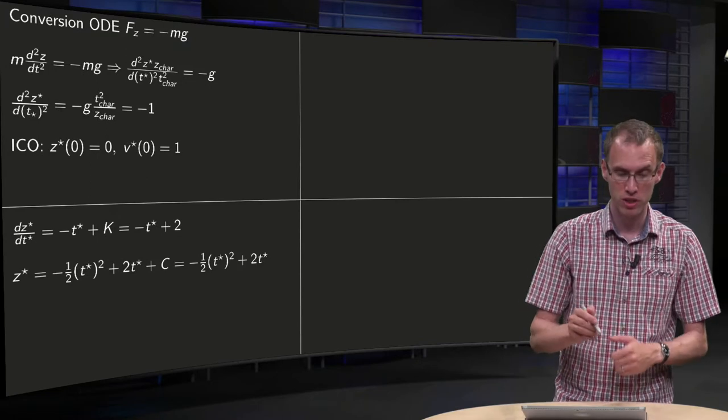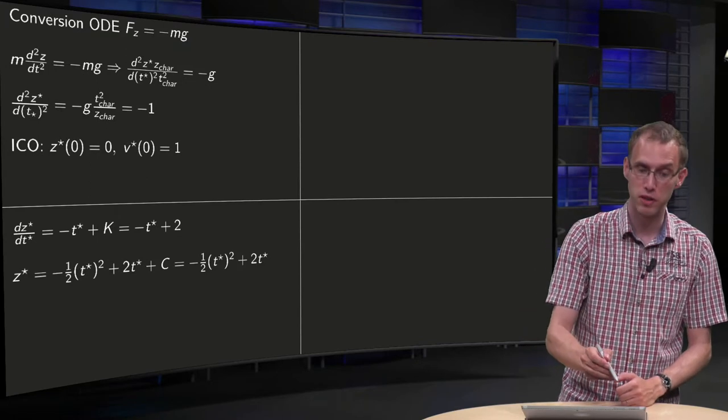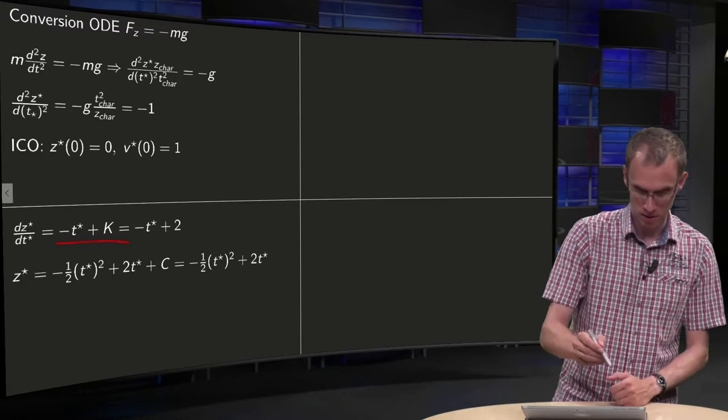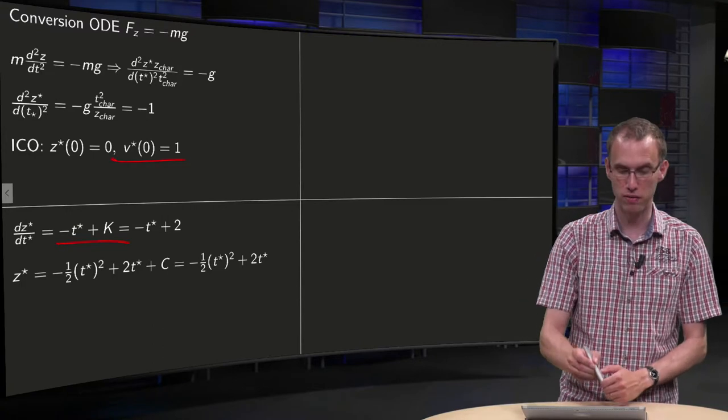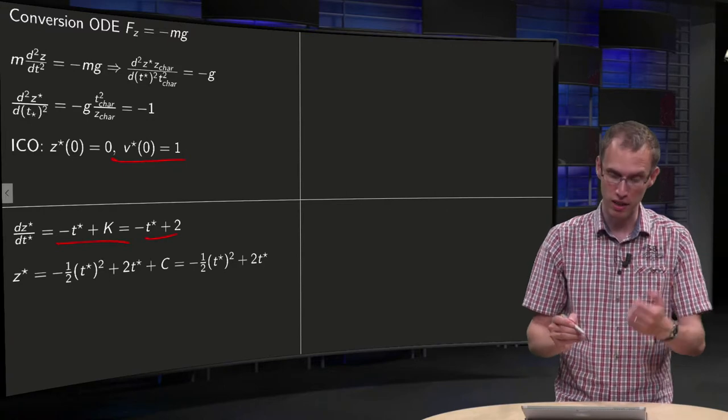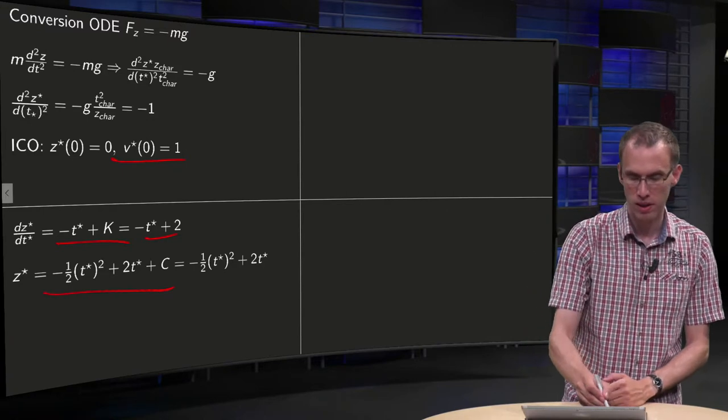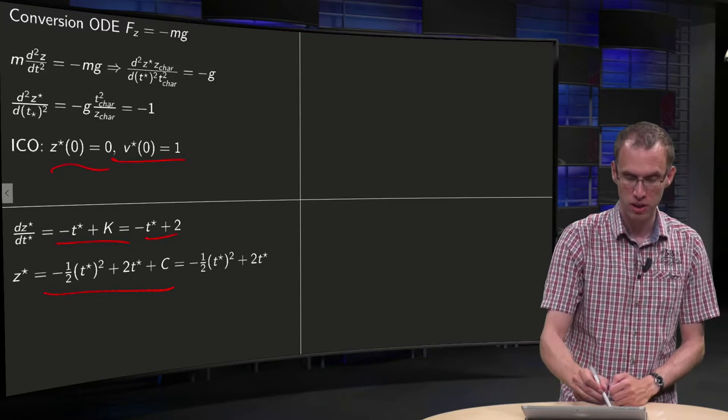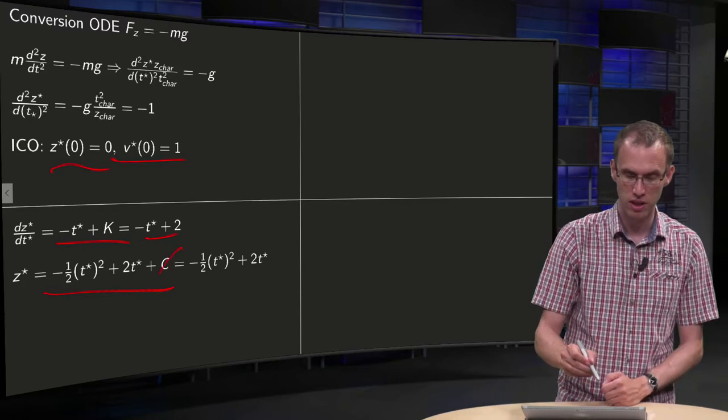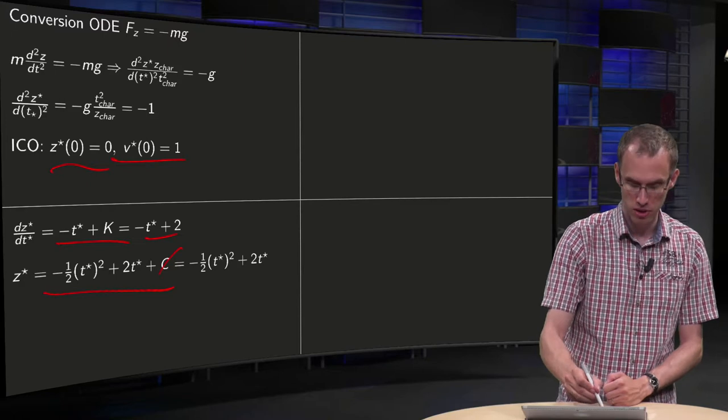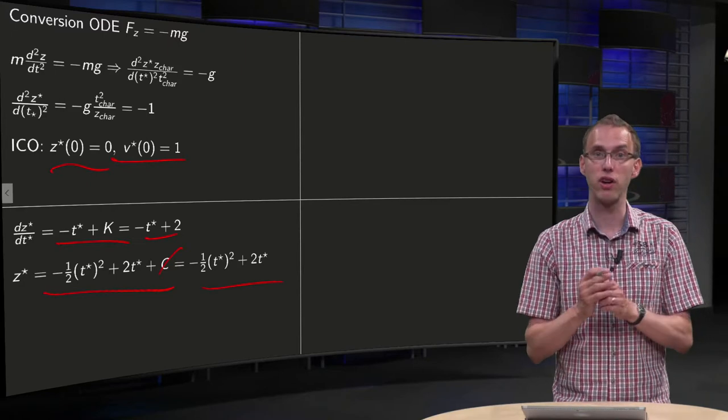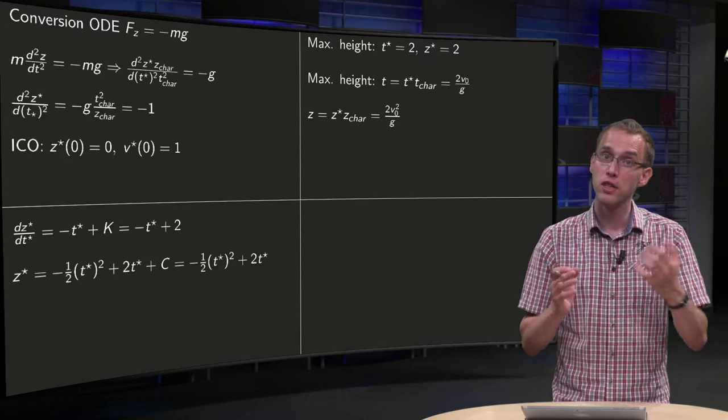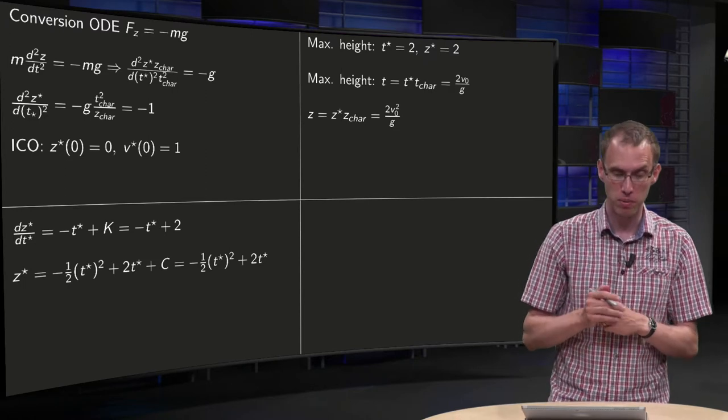Now we can solve it of course. Integrate once with respect to t*. You get minus t* plus k. Use the initial condition to find k equals 2. Integrate once more. Use the second initial condition to get rid of the constant c. So you see your z* equals minus one half t*² plus 2 times t*.